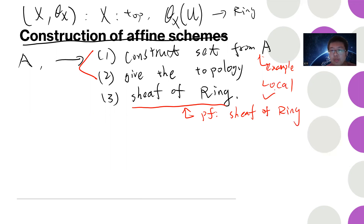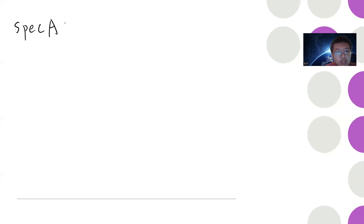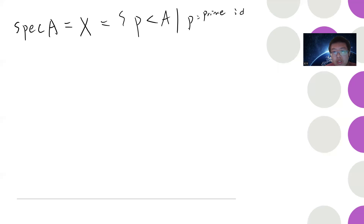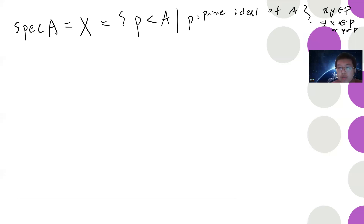In this video there is no example, but I will quickly go through the construction. The construction is simple. You can define the spectrum of A, let's call it X, which by definition is all the prime ideals of A. A prime ideal P is defined so that if xy belongs to P, then x belongs to P or y belongs to P.